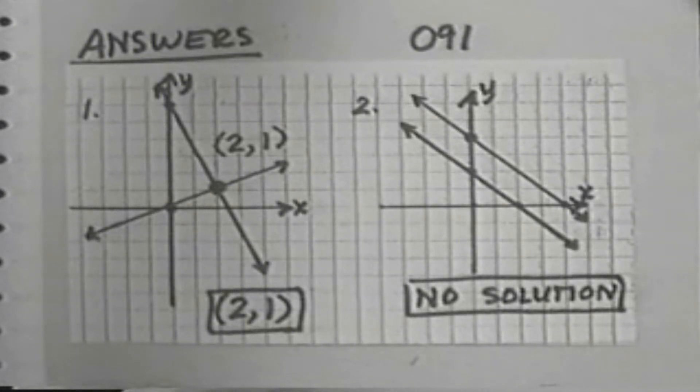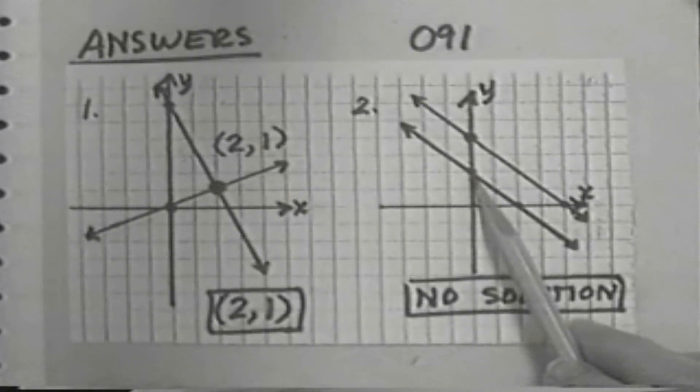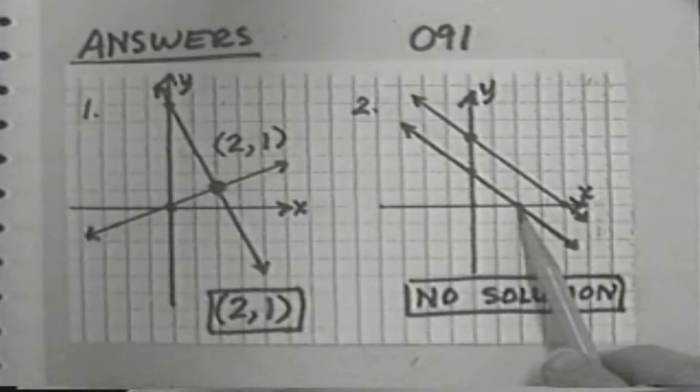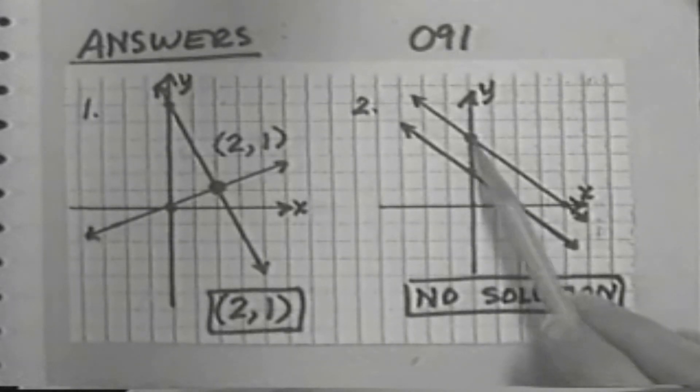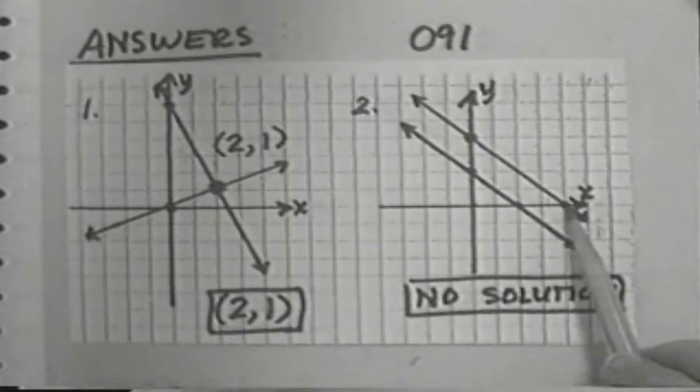For exercise 2, there is no solution because the lines are parallel. One of the lines on your graph should go through a y-intercept of 2 and an x-intercept of 2. The other equation should go through a y-intercept of 4 and an x-intercept of 4.